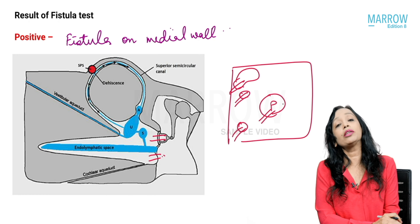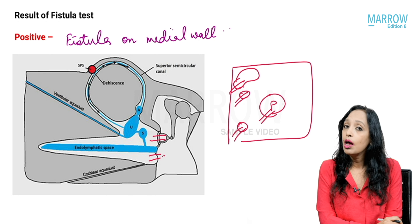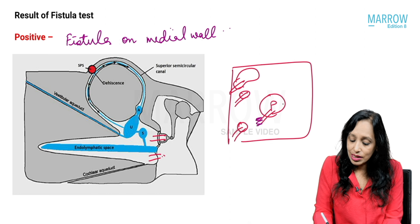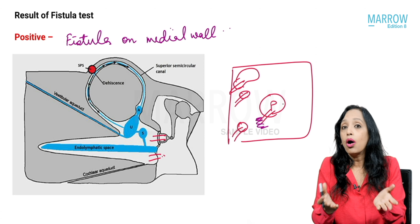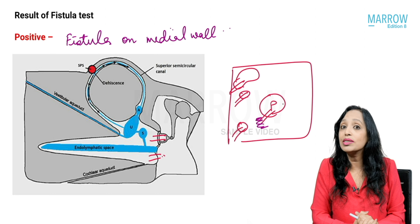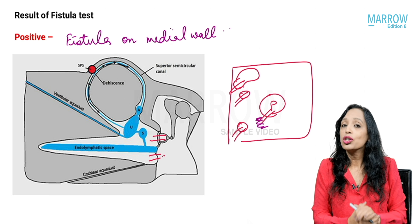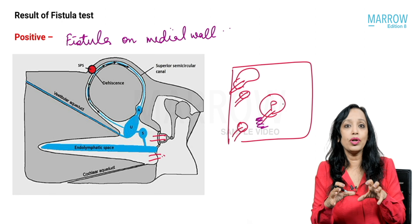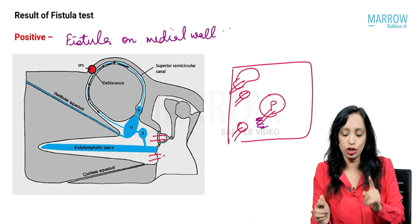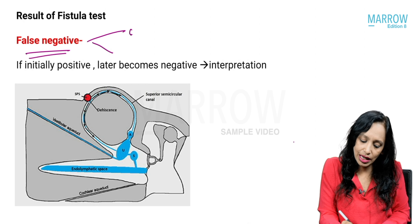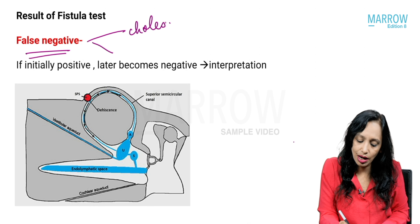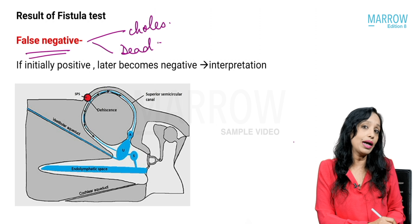It is also possible that the patient has a fistula on the medial wall but the fistula test is negative. This can happen either because the fistula is covered by cholesteatoma, so pressure is not going inside, or the pressure is going inside but the inner ear is not responding because it is dead. This is called a false negative fistula test — seen either in cholesteatoma covering the fistula or in a dead labyrinth.